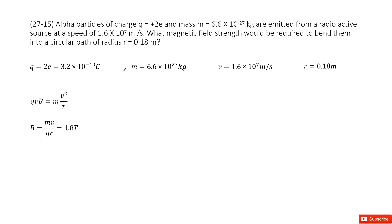And then the mass for the alpha particle, the speed for the alpha particle, and the radius for this circular motion. We need to find the B, the magnetic field strength.